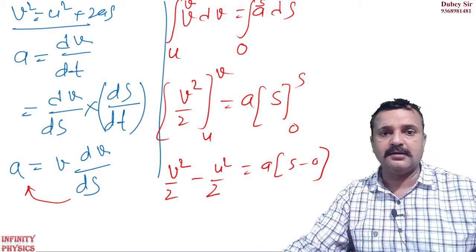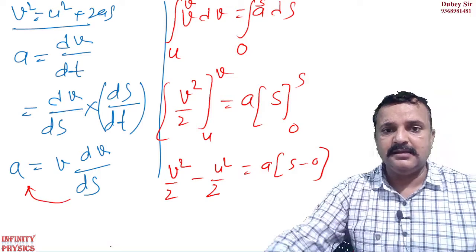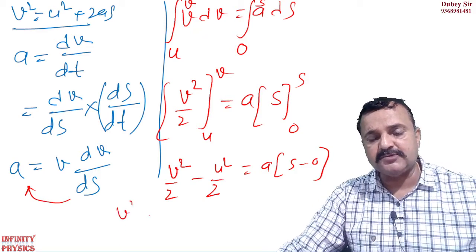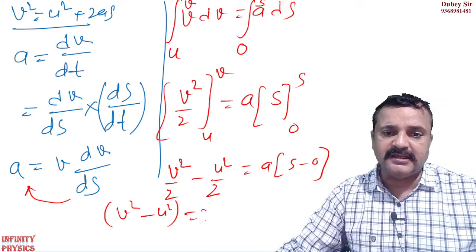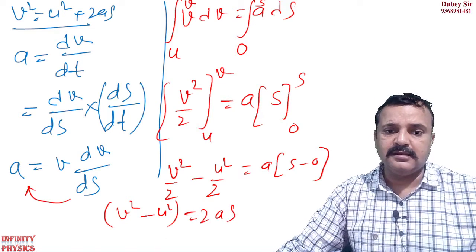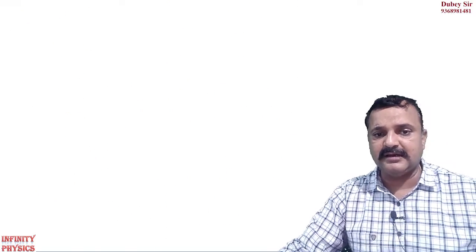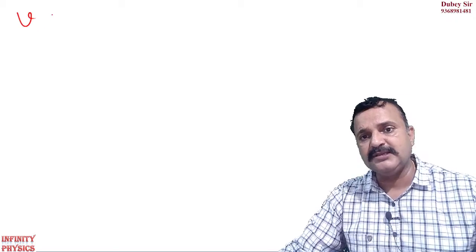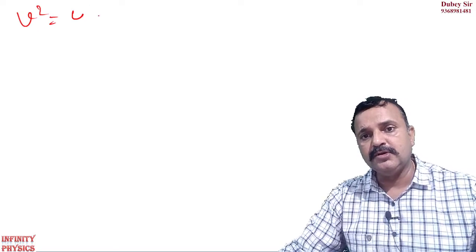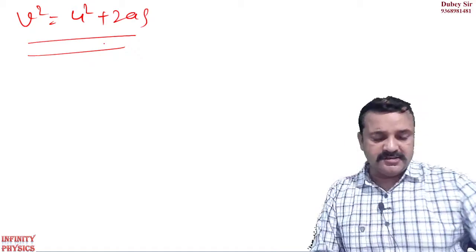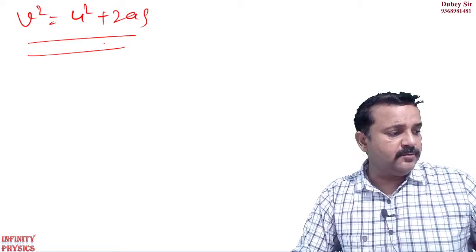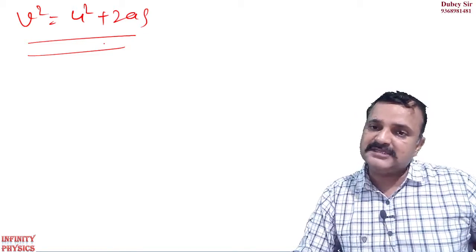Left hand side kya hai? v square minus u square. Yahan 2 ko multiply kar do tahr kya jaaga? 2 a s. Yahan likh sakte ho v square is equal to u square plus 2 a s. Clear hai? So, these are the methodology to derive the equation of motion with the help of calculus method.